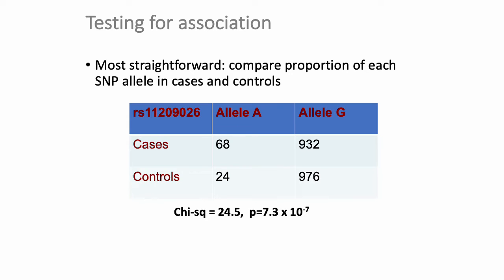If you were to do a Fisher's exact test — just like with the gene set enrichment analysis — you would find a p-value of something really small, like 7.3 times 10 to the negative 70. If there are no errors in your study, you could conclude that there is strong association between the A allele at this position and your case status.